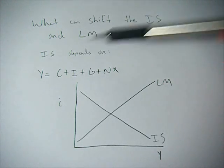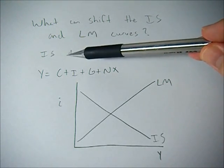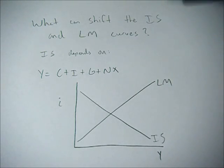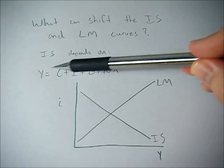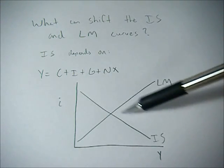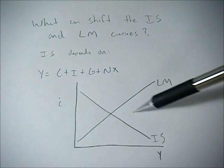The IS curve shows every equilibrium point where investment and savings are in equilibrium. So as long as our GDP equation stays the same, then this IS curve shows that equilibrium relationship.